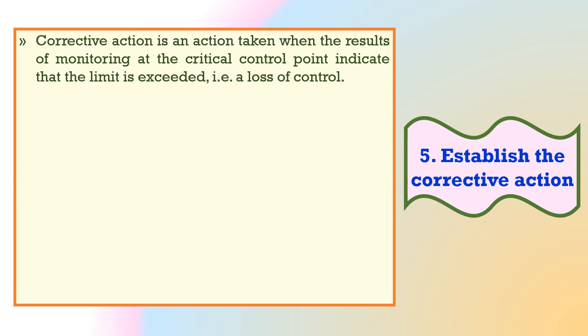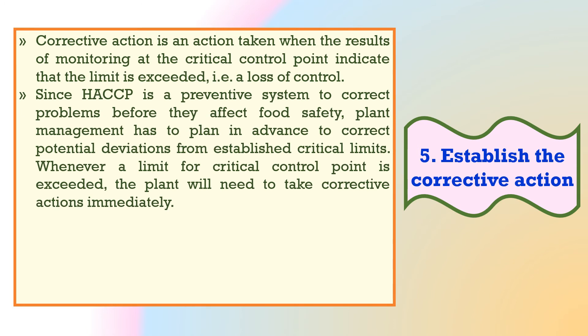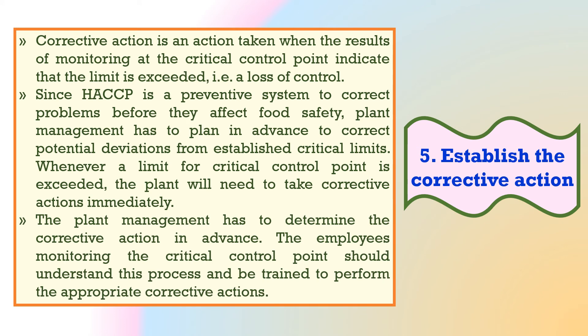The fifth important principle is to establish corrective action. Corrective action is an action taken when the results of monitoring at the critical control point indicate that there is a loss of control. Since HACCP is a preventive system to correct problems before they affect food safety, plant management has to plan in advance to correct potential deviations from established critical limits. Employees monitoring the critical control point should understand this process and be trained to perform the appropriate corrective actions.